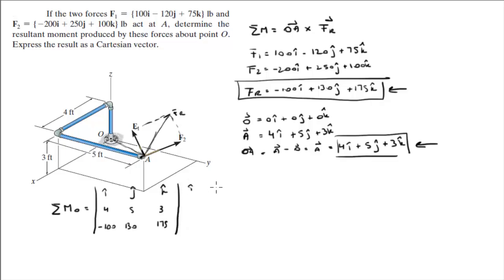The first thing you do is redraw your first two columns: 4, 5, negative 100, and 130. Then you do your positive diagonals. So, i times 5 times 175 is 875i. J times 3 times negative 100 is negative 300j. K times 4 times 130 is positive 520k.